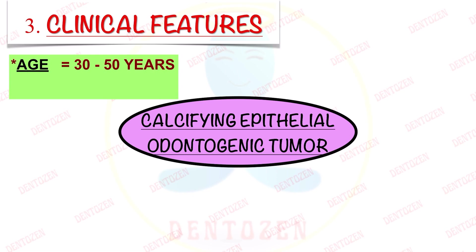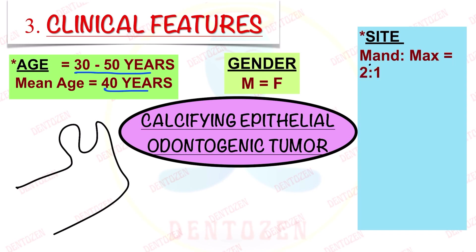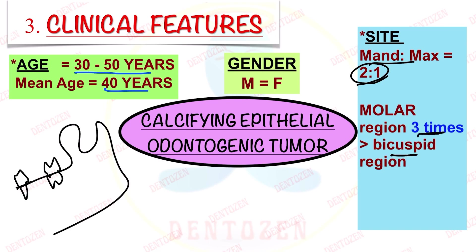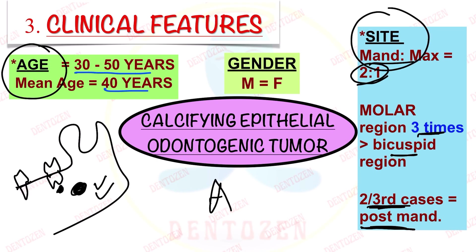If we talk about clinical features, it occurs over a wide age range. Most cases are seen between 30 to 50 years, with a mean age of 40 years. Males and females are equally affected. Regarding site, the mandible is affected more than the maxilla in a ratio of 2:1, and the molar region is affected three times more commonly than the bicuspid or premolar region. Two-thirds of cases occur in the posterior mandible, the most common site — resembling its friend ameloblastoma in terms of age and site.